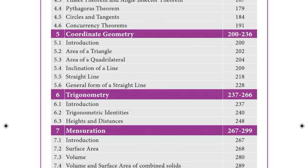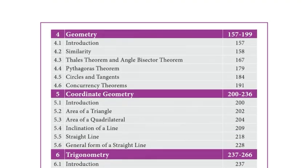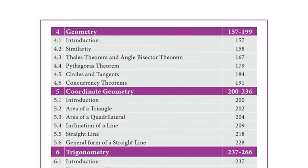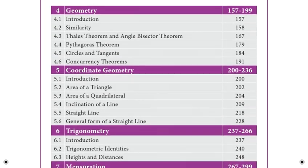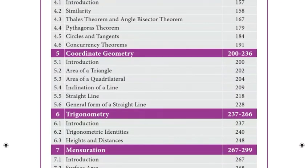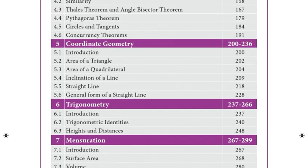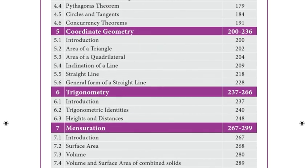The fifth unit is Coordinate Geometry, which covers the area of triangles, the area of quadrilaterals, and straight lines.